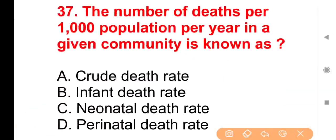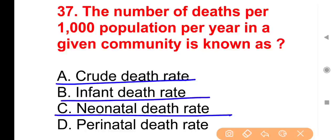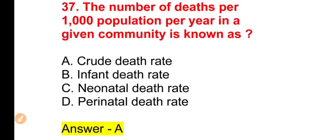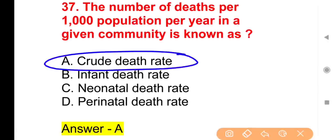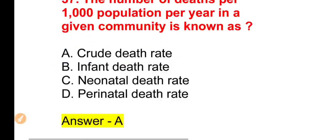Question 37: The number of deaths per 1000 population per year in a community is known as — Option A, Crude death rate; Option B, Infant death rate; Option C, Neonatal death rate; Option D, Perinatal death rate. The right answer is Option A — Crude Death Rate.